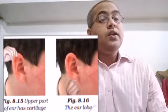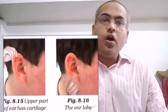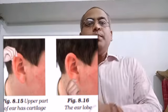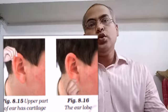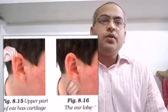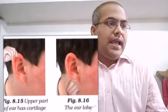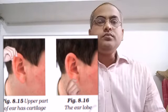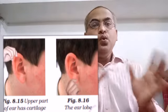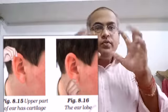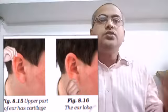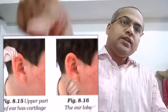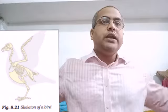Now let's discuss movement. We all know that we move from one place to another — this type of movement is called locomotion. Apart from locomotion, we also move our fingers, hands, and neck. That is also movement, but when you move from one place to another it is specifically called locomotion. We have legs for locomotion, and joints for moving individual body parts.